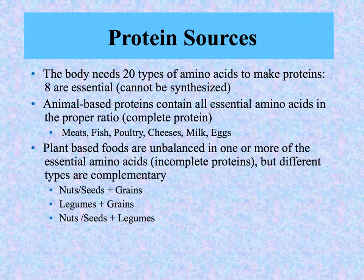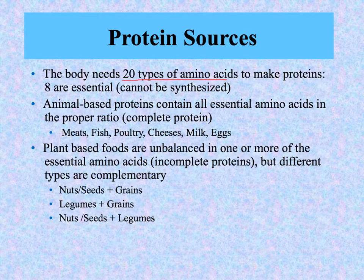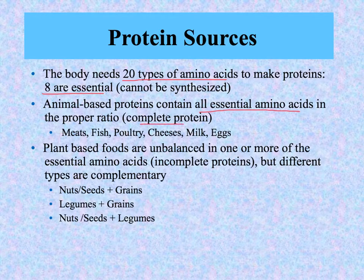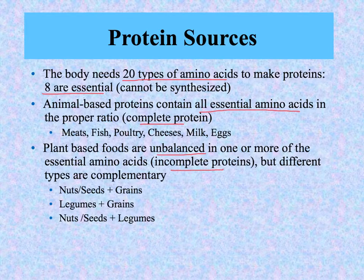Protein is a polymer of amino acids. There are 20 types of amino acids involved in making structures in the human body — out of about 500 types of amino acids overall, we only need a tiny piece of that. Of those 20, eight are essential — there are eight that our liver cannot manufacture from other components, so those eight essential amino acids must come in from food. Proteins from animal-based products — meats, fish, poultry, cheese, milk, and eggs — contain all of the essential amino acids in a good ratio, so they are known as complete proteins. Plant-based foods do not have a good ratio and are unbalanced in one or more essential amino acids, so they're known as incomplete proteins. These amino acids are not missing — they're just not there in quite enough quantity.